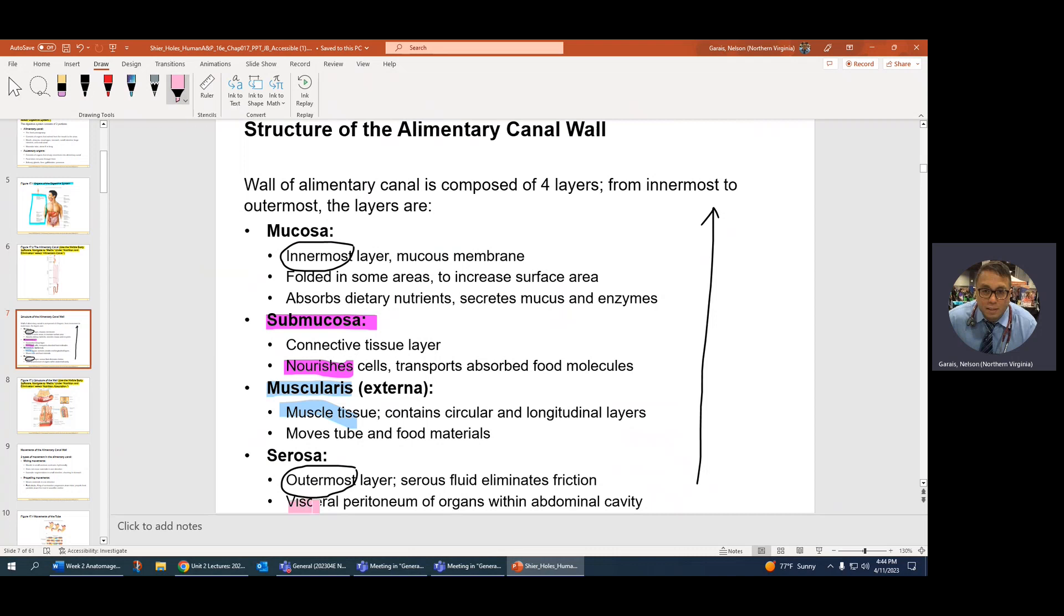And then, of course, know your serosa, which is visceral versus parietal. Okay. And that's the outermost layer. So you have, of course, visceral, right? And remember, does the serous fluid, its function is to decrease friction? It doesn't really eliminate it, but it decreases. And regarding mucosa, sorry, I'm a little bit all over the place. Mucosa, I want you to think goblet cells.